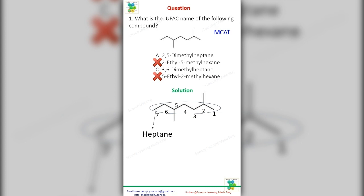Making sure that the carbons are numbered so that the substituents' position numbers are as small as possible, let's identify those substituents. This compound has two methyl groups at carbons 2 and 5, so the correct IUPAC name is 2,5-dimethylheptane.